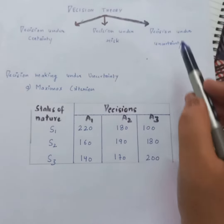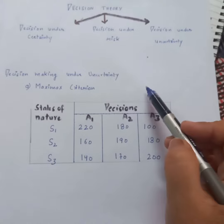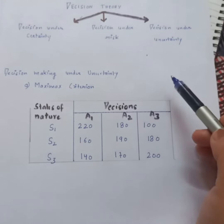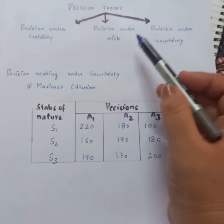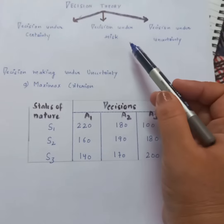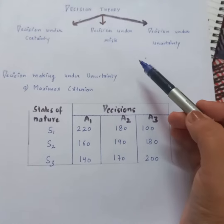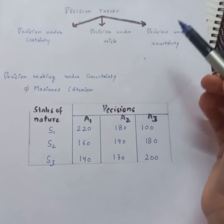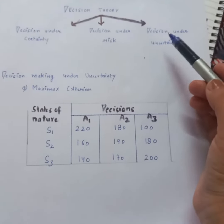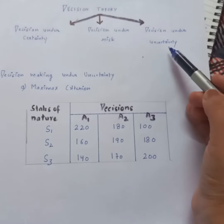Now, as you know when you have to take any decision, we have various alternative courses of action. Decision theory helps us determine which alternative we choose so that it proves to be beneficial for the entire organization. In this video, we are going to talk about decision making under uncertainty.